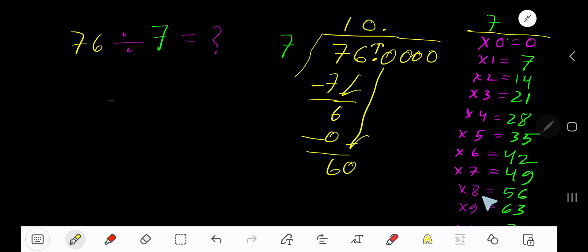9 times 63, which is greater, so 8 times. 8 times 7 gives you 56. If you subtract, you get 4. Bring down another 0. 7 goes into 40 how many times? 6 times 42, which is greater, so 5 times.